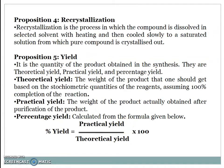Proposition 4: Recrystallization is the process in which compound is dissolved in selected solvent with heating and then cooled slowly to a saturated solution from which pure compound is crystallized out. Proposition 5: Yield - It is the quantity of the product obtained in a synthesis. They are theoretical yield, practical yield and percentage yield.